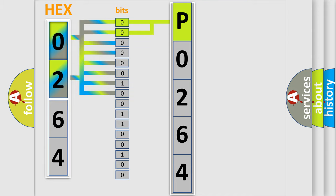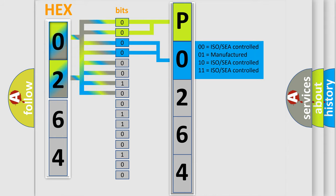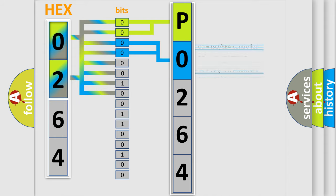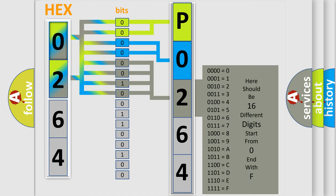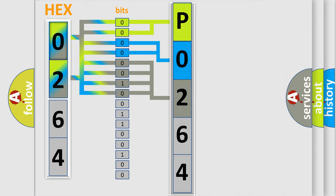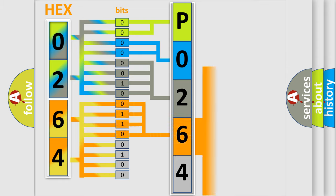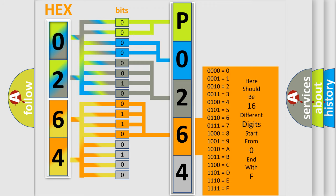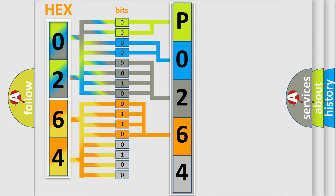The next two bits determine the second character. The last bit styles of the first byte define the third character of the code. The second byte is composed of a combination of eight bits. The first four bits determine the fourth character of the code, and the combination of the last four bits defines the fifth character. A single byte conceals 256 possible combinations.